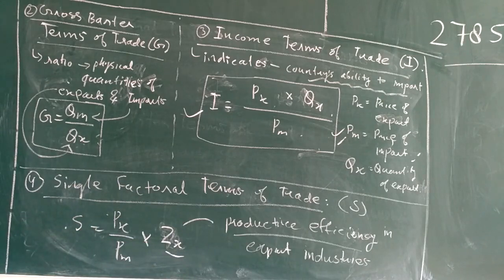One important point is Zx - this represents product efficiency in the export industry, a country's production efficiency in producing particular export products. This is the efficiency index, a particular factor involved in single factorial terms of trade.